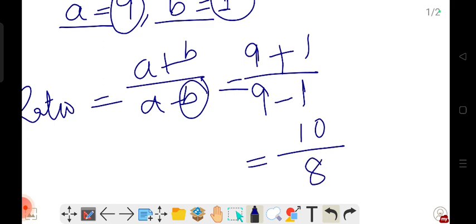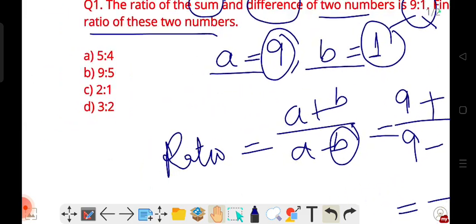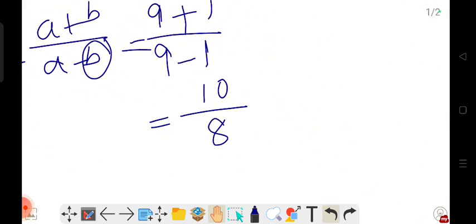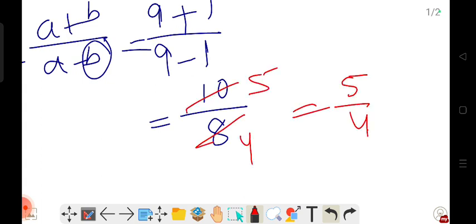So we get 10 is to 8. But in the options there's no 10 is to 8. We need to put it in simplest form. So we divide by 2. Two fours are 8, two fives are 10. So we get 5 by 4, which means 5 is to 4.